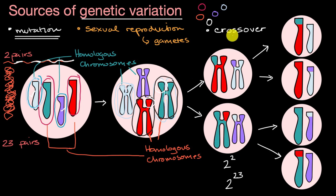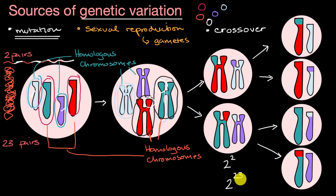Crossover is actually reasonably common during meiosis, so it's mixing things up even more than these 2 to the 23rd combinations — a lot of variation that you can produce through sexual reproduction.